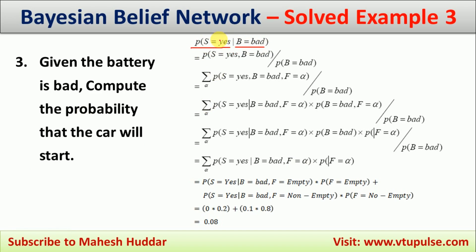Looking at the numerator, we are given the condition for start and for battery. But gauge and fuel have not been given. So we need to check: to calculate P(B=bad), we don't need anything since battery is the topmost entity. To calculate P(start), we need to know the status of fuel and battery — we don't need gauge, but we do need fuel. Battery is already given as bad, but we don't know the value of fuel.